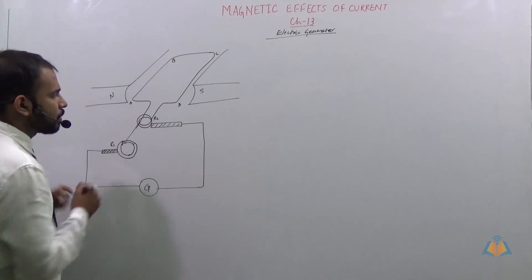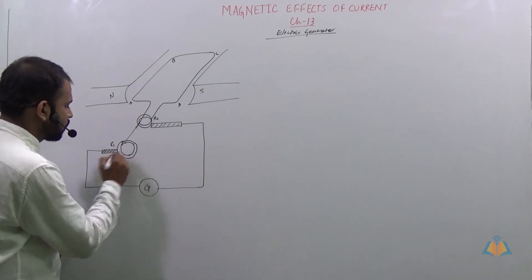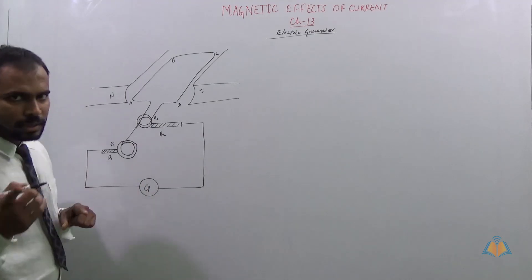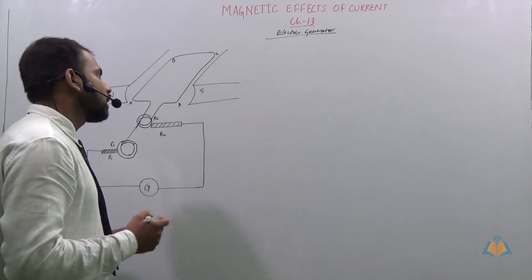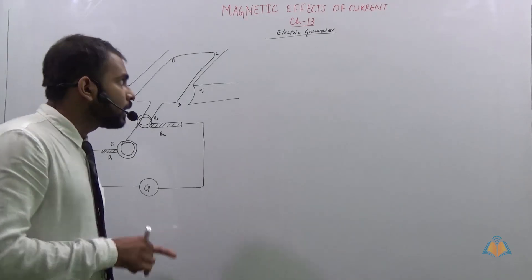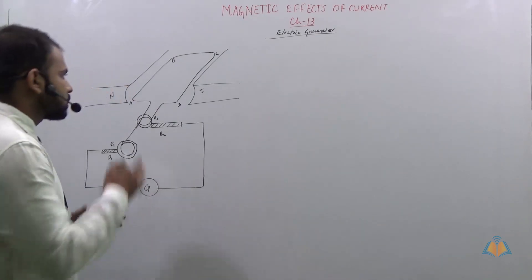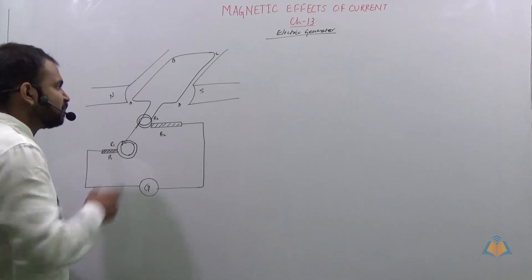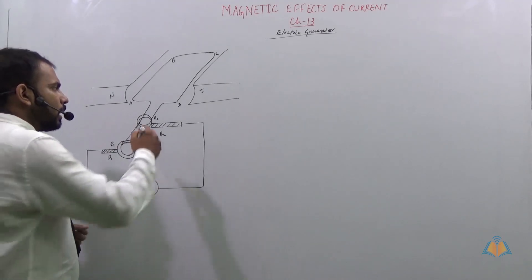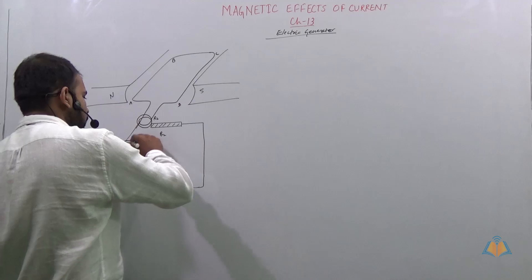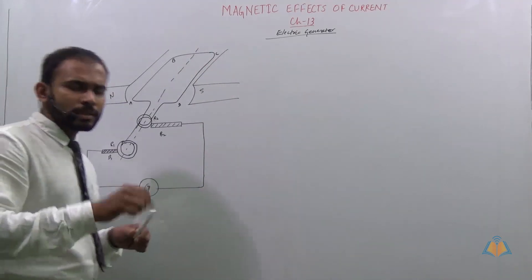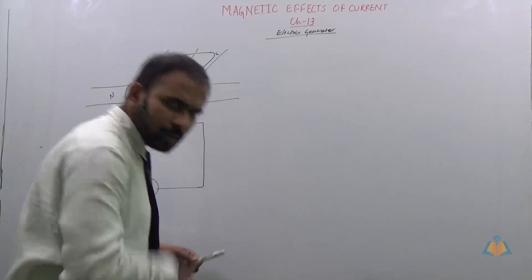We have carbon brushes B1 and B2 attached to the slip rings. A galvanometer measures whether current is flowing in the circuit. There is also a shaft — an iron rod in between — which is rotated.